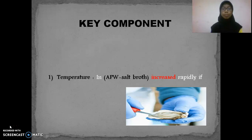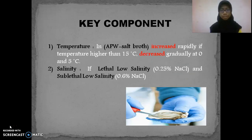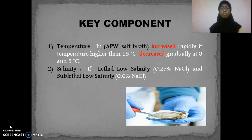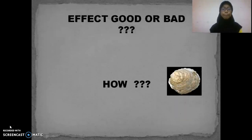The key components of Vibrio parahaemolyticus are temperature and salinity. For temperature in APW: growth will increase rapidly if the temperature is higher than 15 degrees Celsius, but will decrease gradually at 0 and 5 degrees Celsius. For salinity, there are two types: lateral low salinity at about 0.25%, and sub-lateral low salinity at about 0.6%.